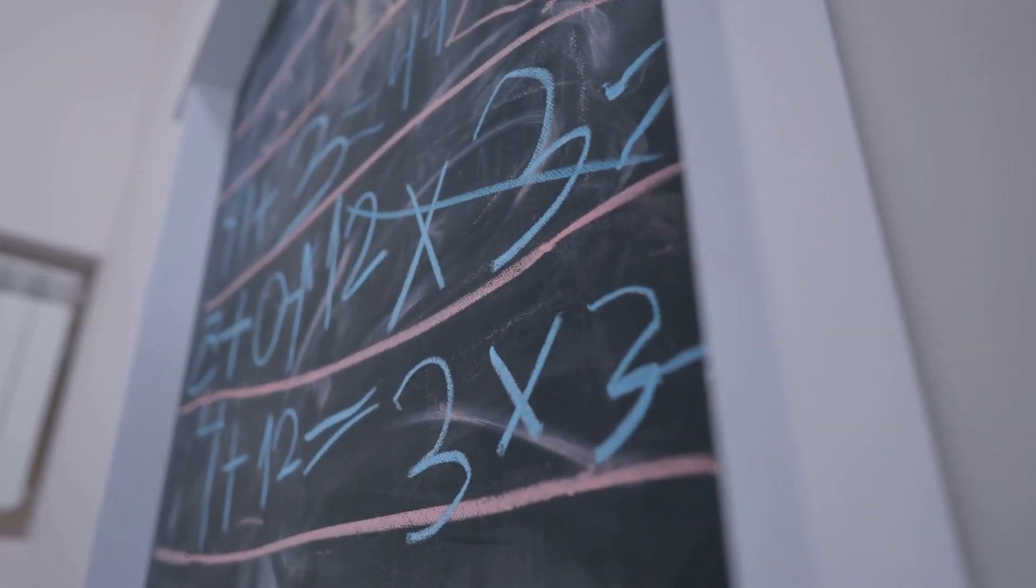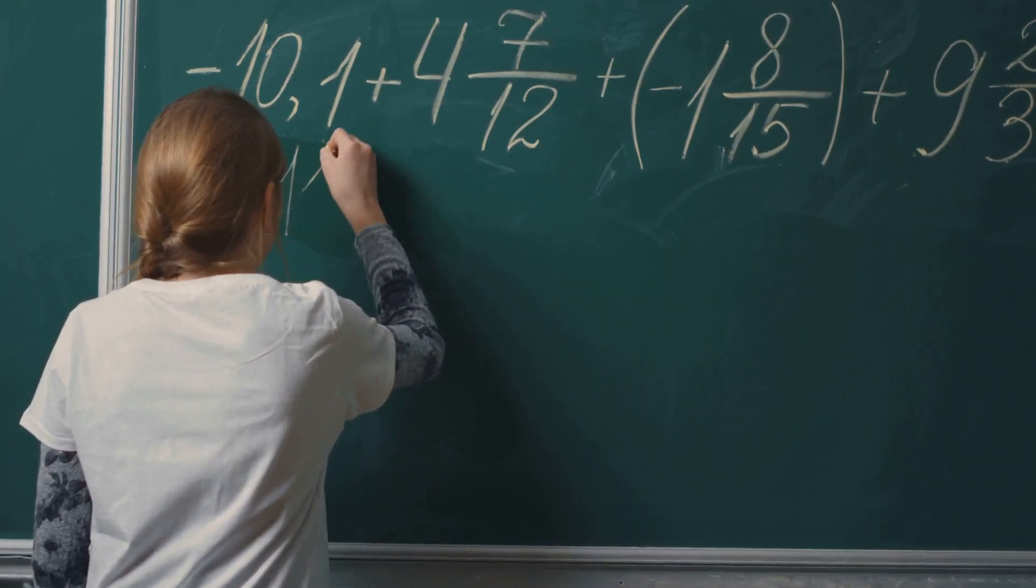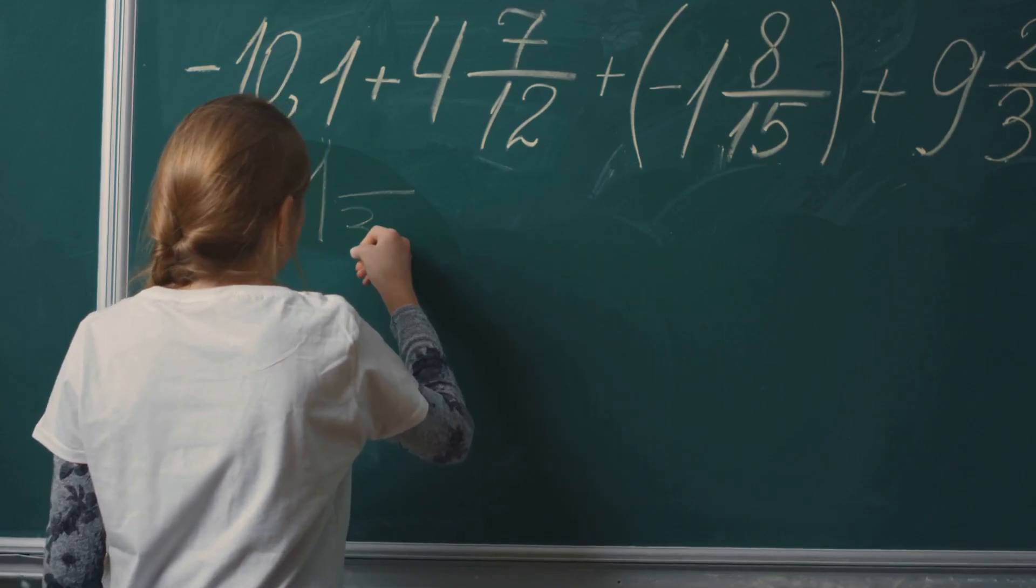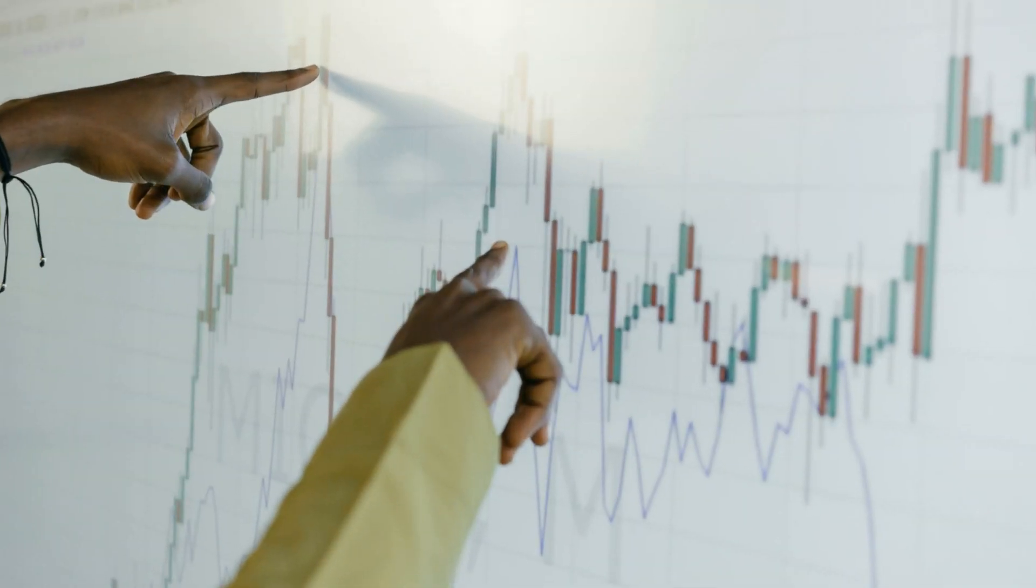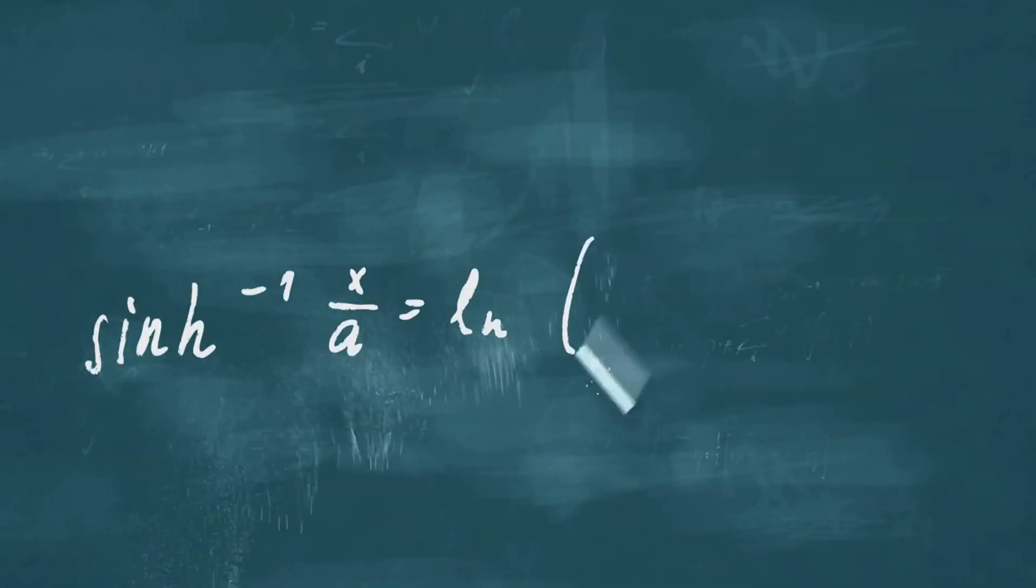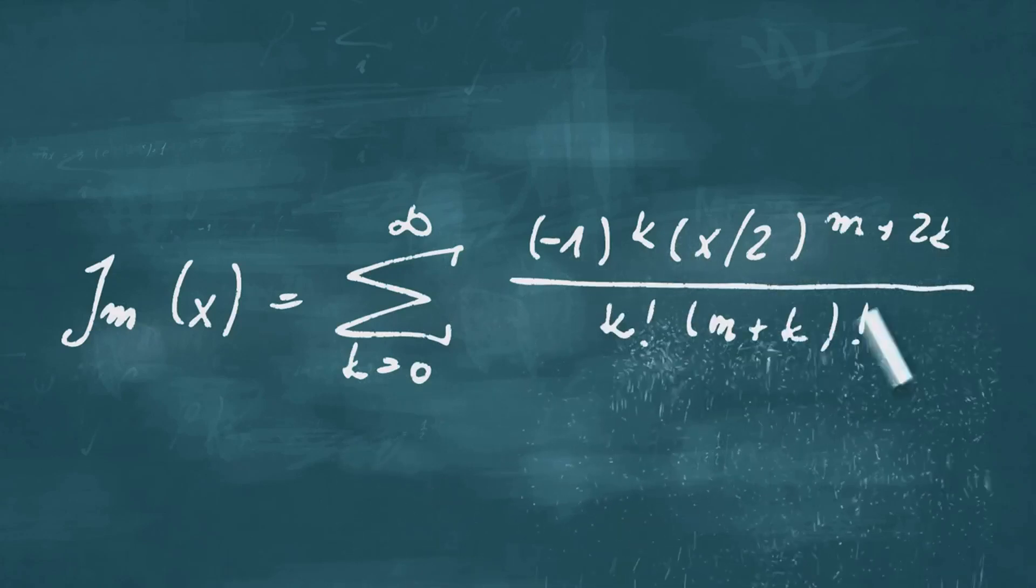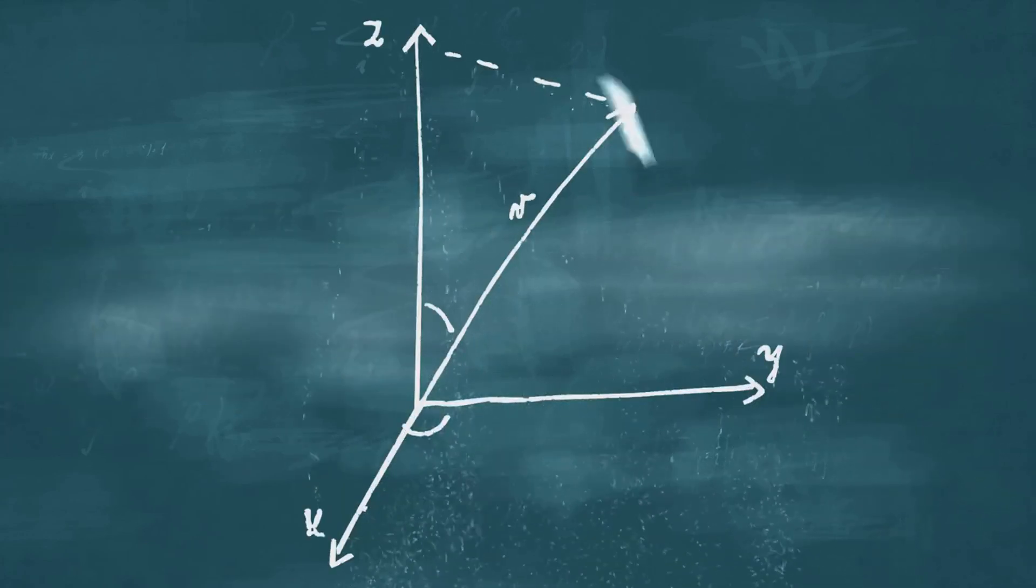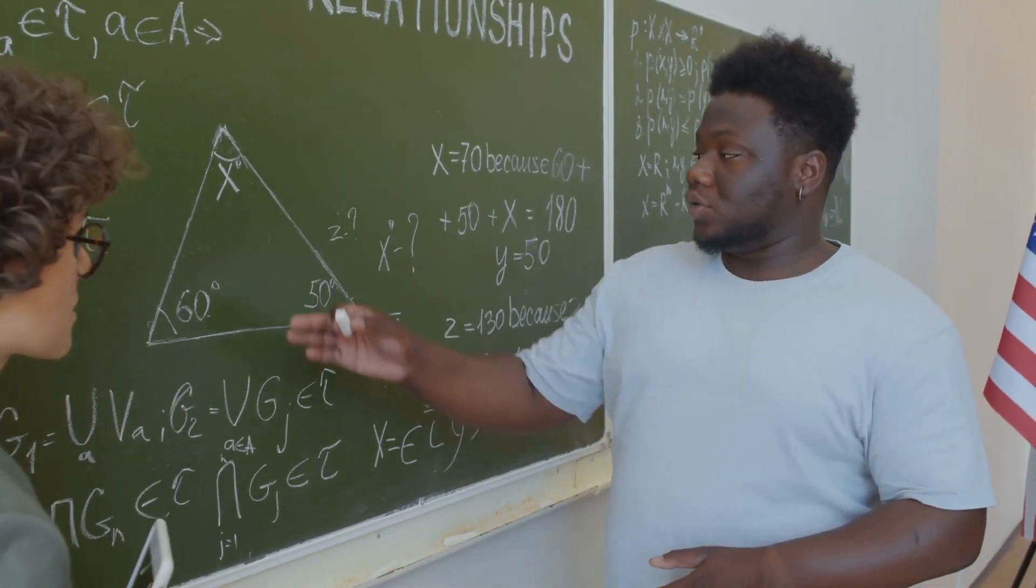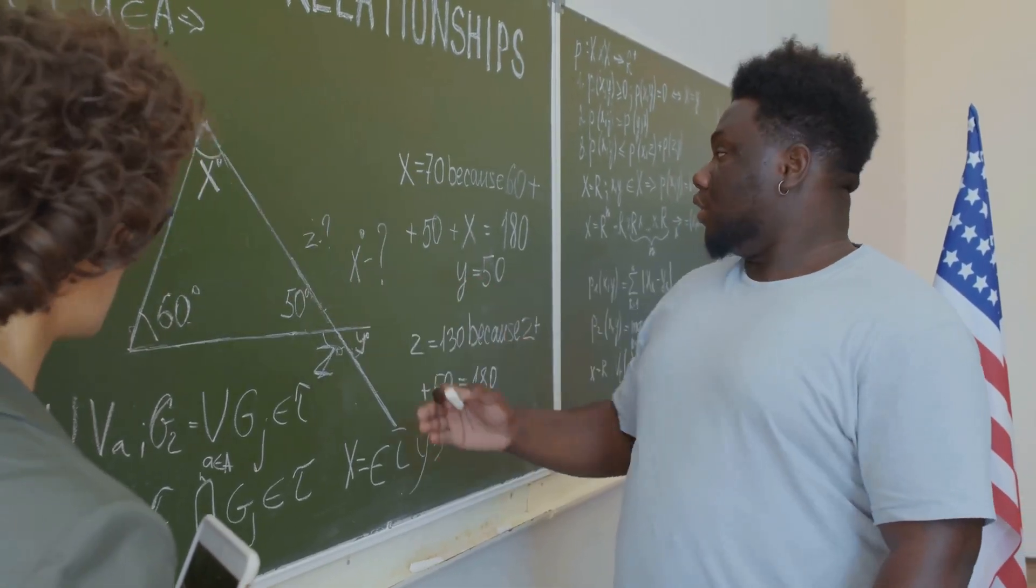For f(2.1), we find (2.1² - 4) / (2.1 - 2) = 0.41 / 0.1, which equals 4.1. As we approach 2 from both sides, the values converge around 4. This illustrates the significance of limits, as they reveal the behavior of the function near a point, even though f(2) is undefined due to division by 0. Thus, limits provide crucial insights into function behavior, distinguishing between the actual outputs and the values the function approaches as inputs near a specific point.